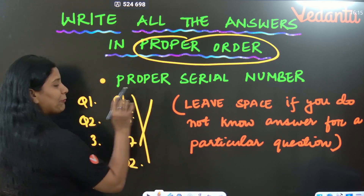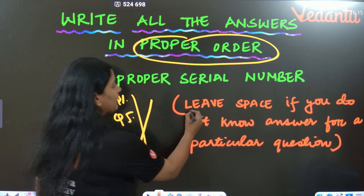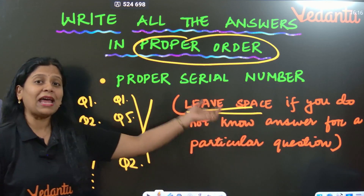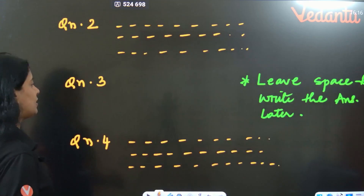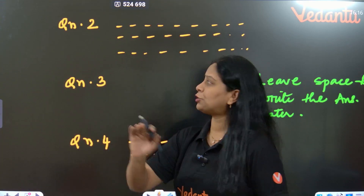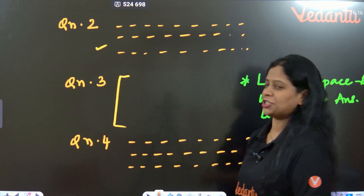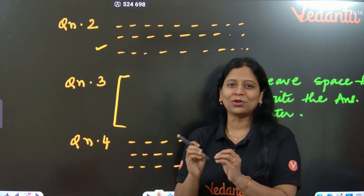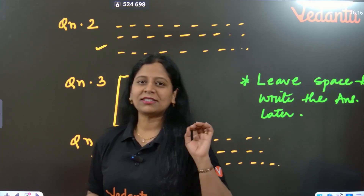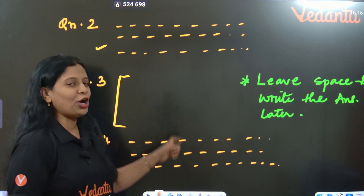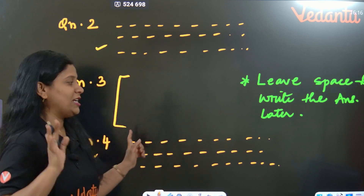This is the wrong way. If you don't know the answer for any question, leave some space, skip that question, and at the end of the paper come back and write the answer. For example, if you can answer question number 2 and question number 3 but not another, leave some space for that question and write the next question number. Always try to maintain proper order. This point is useful not only for English but for all subjects.